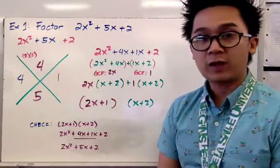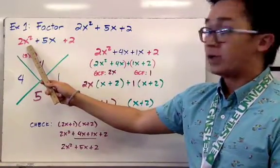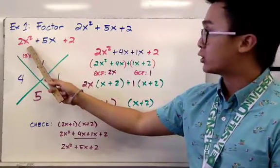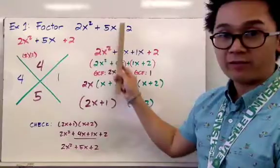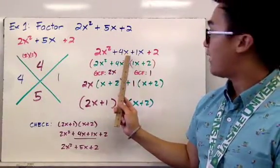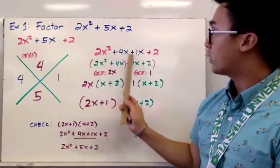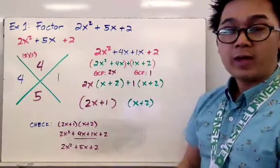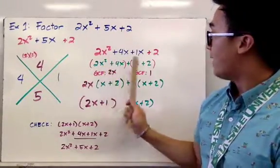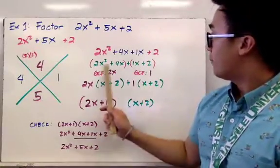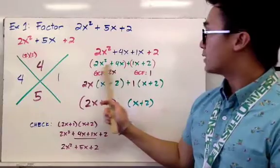Now for stage two, we copy the original quadratic term 2x squared, then replace the middle term with the expanded form: 4x plus 1x, and copy the last term. Our new polynomial is 2x squared plus 4x plus 1x plus 2. By factoring by grouping, we group the first pair (2x squared plus 4x) and the second pair (1x plus 2).